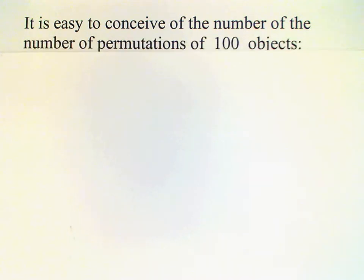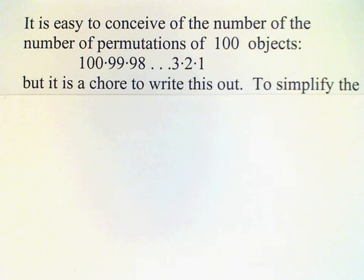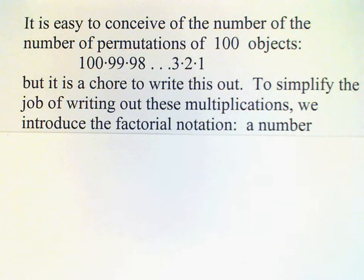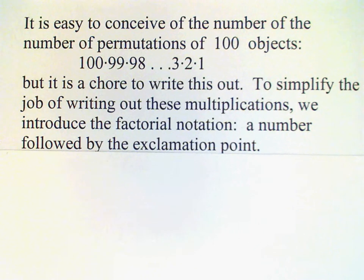And so continuing with this idea, it's easy to conceive of the number of permutations of 100 objects. We start with 100 and then multiply by 99, 98 and so on down to three times two times one. But it's kind of a chore to write all these numbers out. And so to simplify this, we have a special notation which is known as the factorial notation.